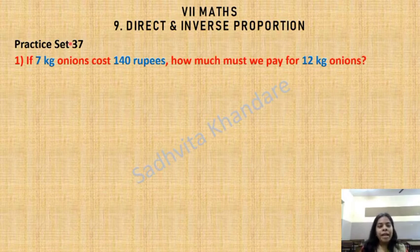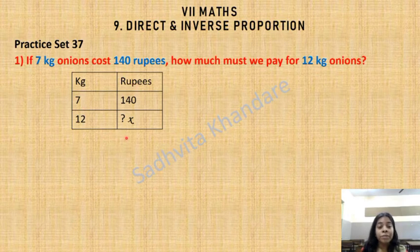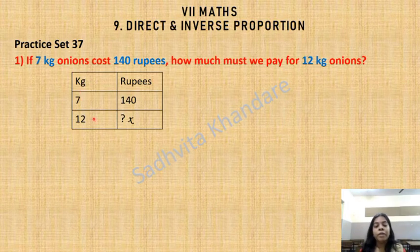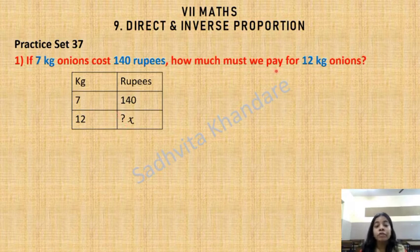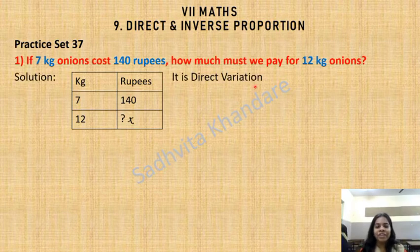Practice set question 1: If 7 kg onions cost 140 rupees, how much must we pay for 12 kg? We make a table with columns for kg and rupees: 7 kg — 140 rupees; 12 kg — x (unknown). This is direct variation because more kg means more cost, so we will use cross multiplication.